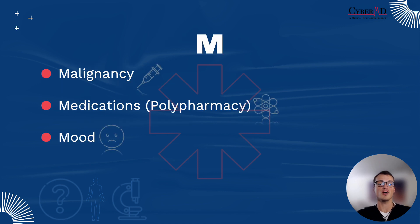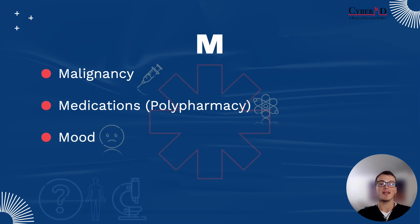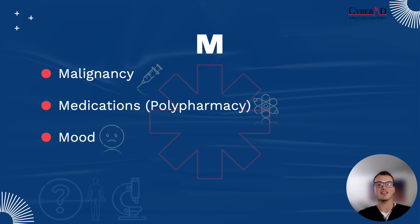For our W, we're actually going to flip it upside down and use it as an M. The three things we are considering under the M are malignancy, medications or polypharmacy, and mood or major depressive disorder. Remember that as we move through a differential diagnosis, we should be using our history to rule in or rule out specific diagnoses and tailor our physical exam and workup to that differential.